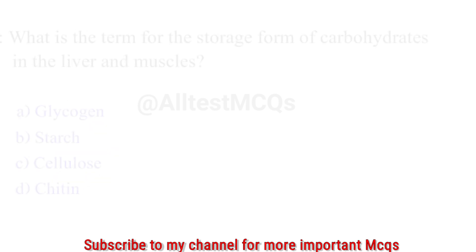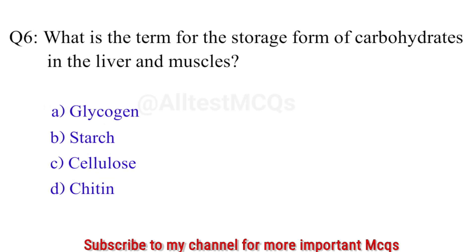Question No. 6: What is the term for the storage form of carbohydrate in the liver and muscles? The right answer is Option A: Glycogen.